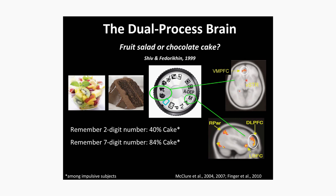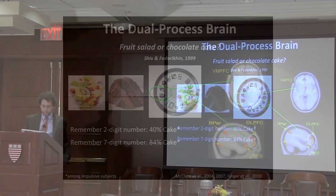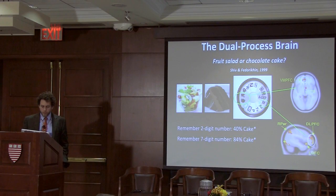We actually know a fair amount about how these different processes play out in the brain. The ventromedial prefrontal cortex seems to be a relay station for weighing different kinds of decision weights, especially emotional ones. And then the dorsolateral prefrontal cortex is, to oversimplify, the center of manual mode thinking.